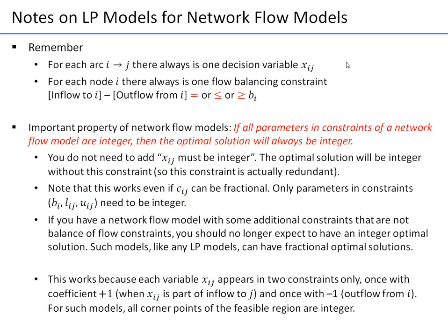Later when we discuss integer programming we will add a constraint that xij must be integer. For network flow models you don't have to add this constraint — you get an integer solution for free. In fact, the integer constraint is redundant for network flow models: it will be satisfied anyway because of something else in the model. Note that costs do not need to be integer; only the bi's, lij's, and uij's need to be integer.